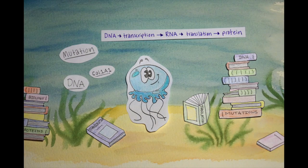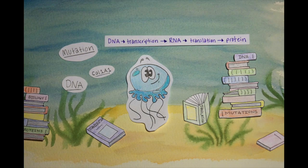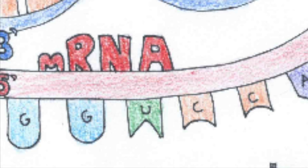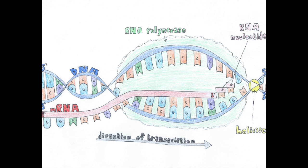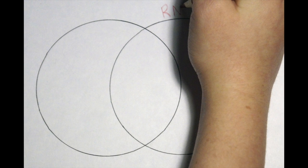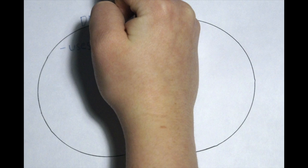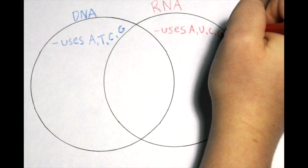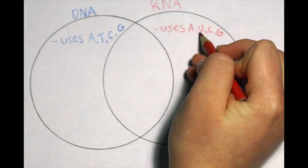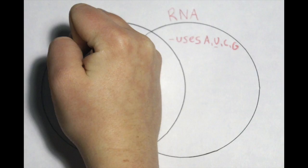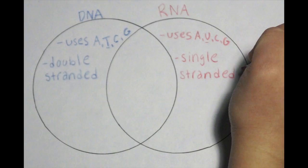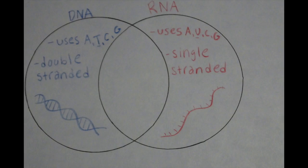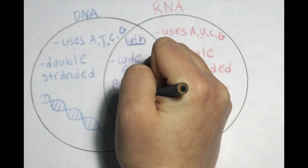DNA begins to code for proteins first by the process of transcription. Transcription turns DNA into mRNA, or messenger RNA, and takes place in the nucleus. The difference between DNA and RNA is that DNA has nitrogenous bases adenine, thymine, cytosine, and guanine, while RNA uses uracil instead of thymine. Also, DNA is double-stranded, while RNA is single-stranded. But they both eventually code for proteins.